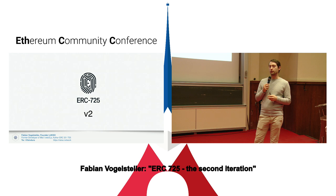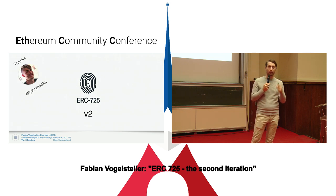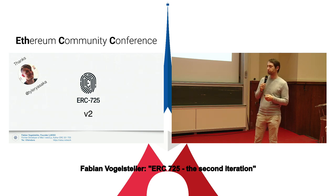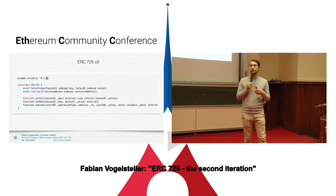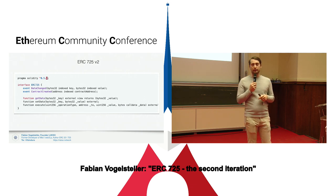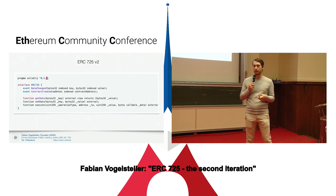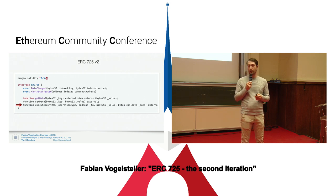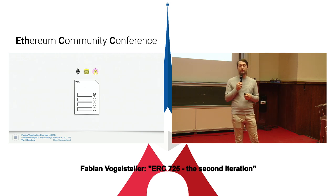Therefore, I and Taylor sat together and thought: what exactly is the core piece of making a profile on-chain work? The key to that is you make it extremely simple. That's probably what made ERC-20 successful — it was extremely simple. With this simplicity, you have get data and set data, so you can set data into a smart contract and get data from a smart contract, and you have an owner and you can execute — meaning talk through this smart contract. This actually solves a lot of problems if you think about it.